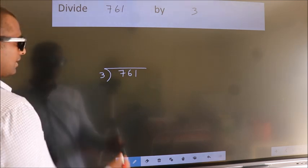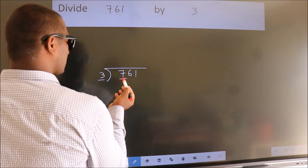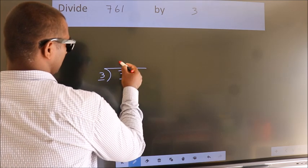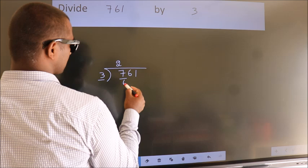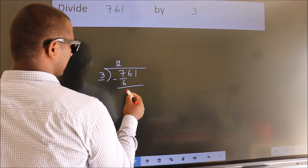Next, here we have 7, here 3. A number close to 7 in the 3 table is 3 times 2 equals 6. Now we should subtract. We get 1.